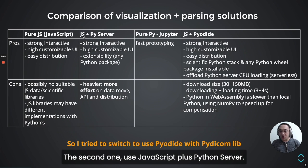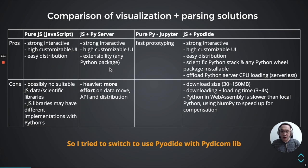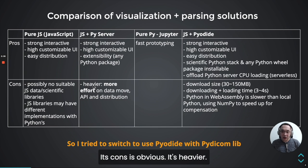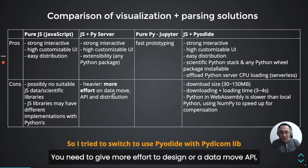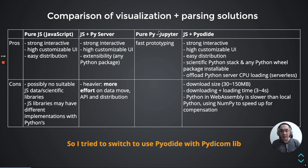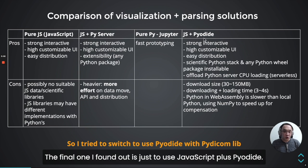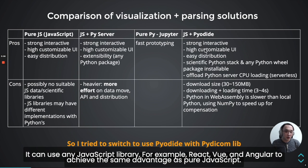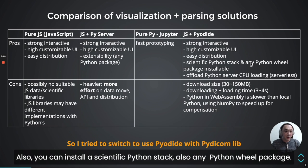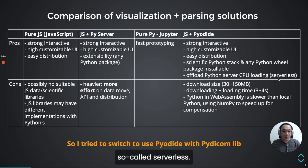The second option is JavaScript plus a Python server. You can achieve very high extensibility to install any Python package. But the downside is obvious — it's heavier. You need more effort to design an API. You also need to deploy your server. You can also try Jupyter, but it's suitable for fast prototyping. The final option I found is to use JavaScript plus Python via Pyodide. You can use any JavaScript library — Vue and Angular — to achieve the same advantages as pure JavaScript, and you can install a scientific Python stack and any Python wheel package. This achieves offloading to a serverless approach.